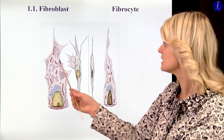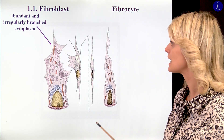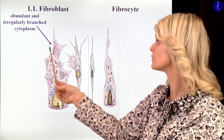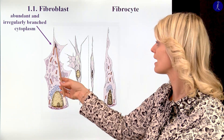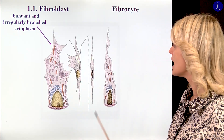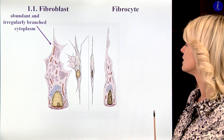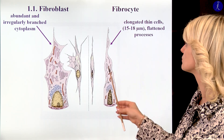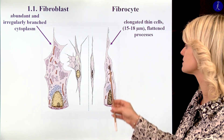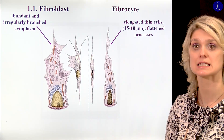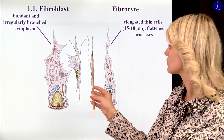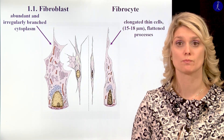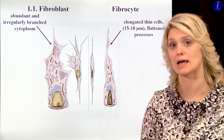If we look at the cytoplasm of the fibroblasts, it is abundant, irregular, with big processes. In the case of fibrocytes, we have elongated, flattened processes, and they are not as large compared to the fibroblasts.